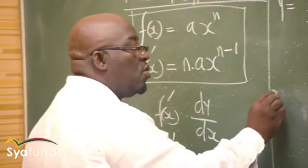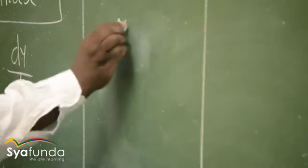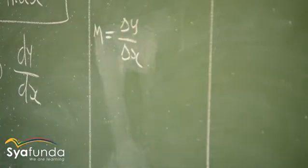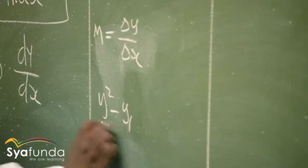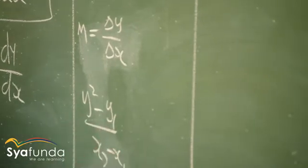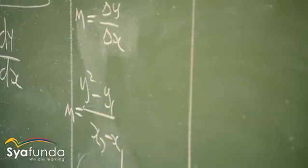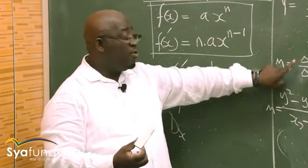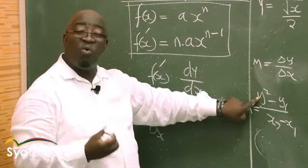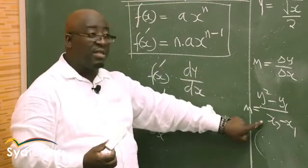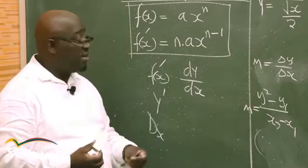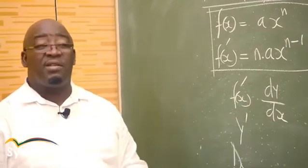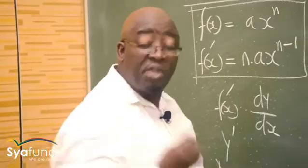Change in y over change in x is the gradient. y₂ minus y₁ over x₂ minus x₁ is the gradient. Whenever we have that situation — change in y over change in x — that is the gradient.